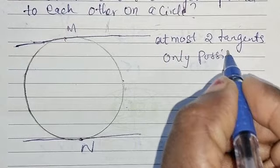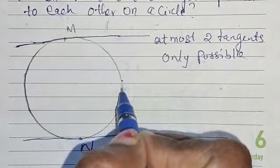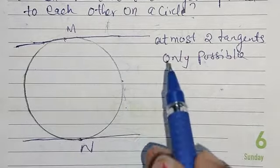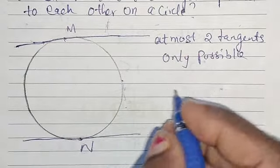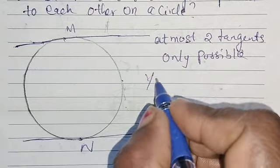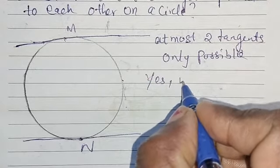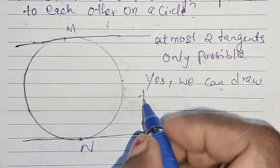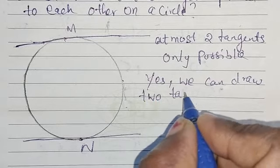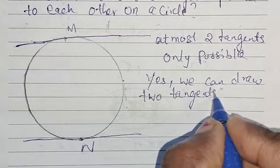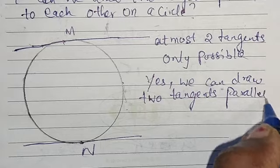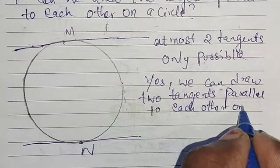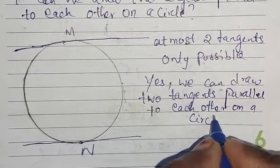Parallel tangents are possible. Two tangents are possible. The answer is yes, we can draw two tangents parallel to each other on a circle. Yes, we can draw two tangents parallel to each other on a circle.